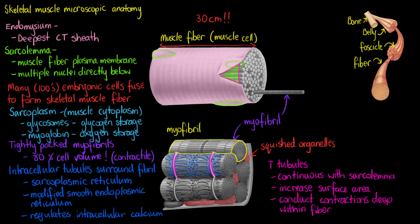To illustrate: the sarcolemma runs all the way around the cell, and a nerve impulse travels through it. Because T-tubules extend down into the middle of the cell, we can deliver an impulse to the deepest segments of the muscle fibre at nearly the same time as to the myofibrils near the surface. The T-tubules let that action potential rush down into the deepest segments so that the whole grouping of myofibrils within the muscle cell can contract all at once.